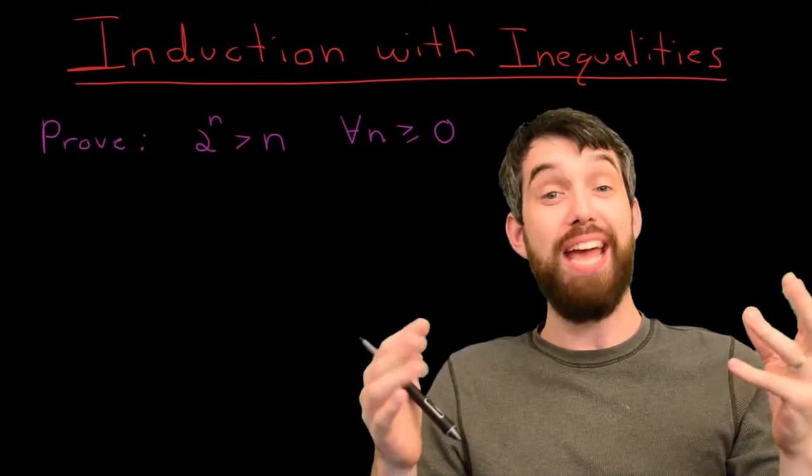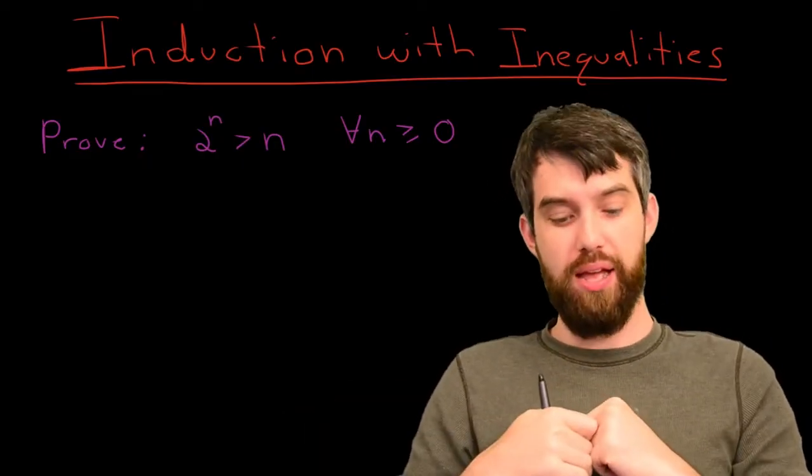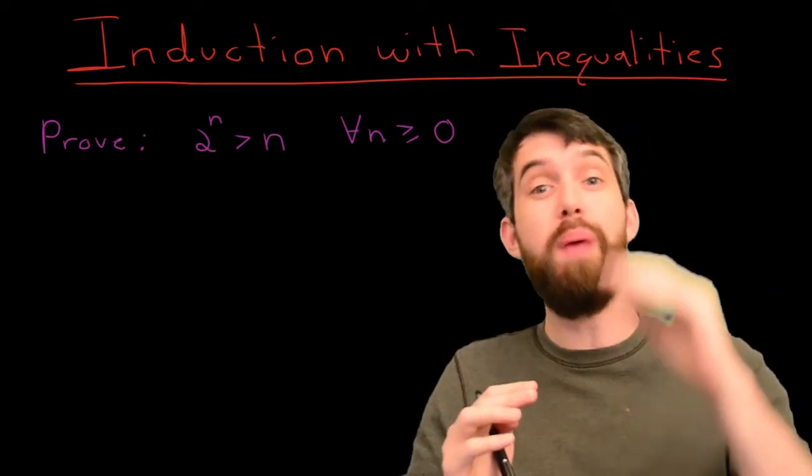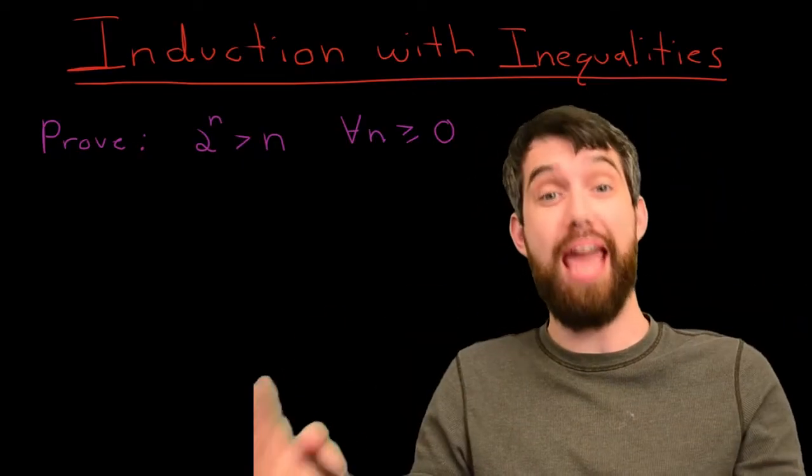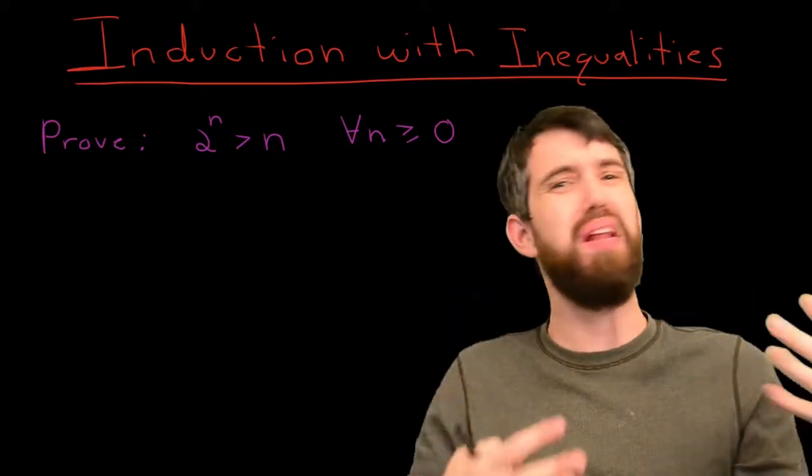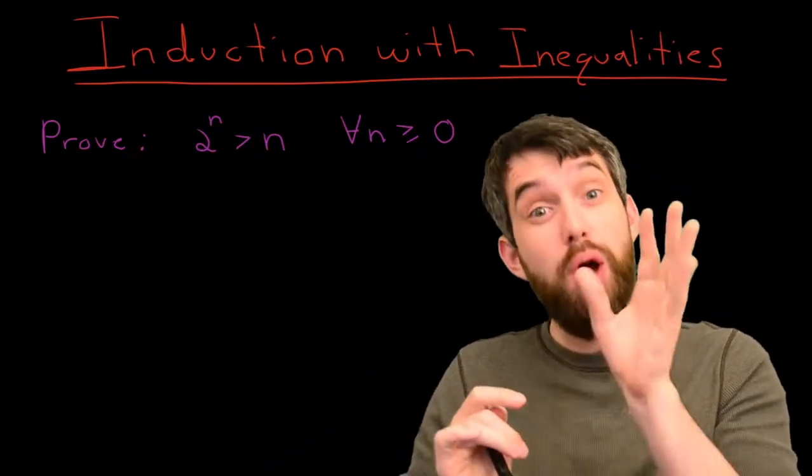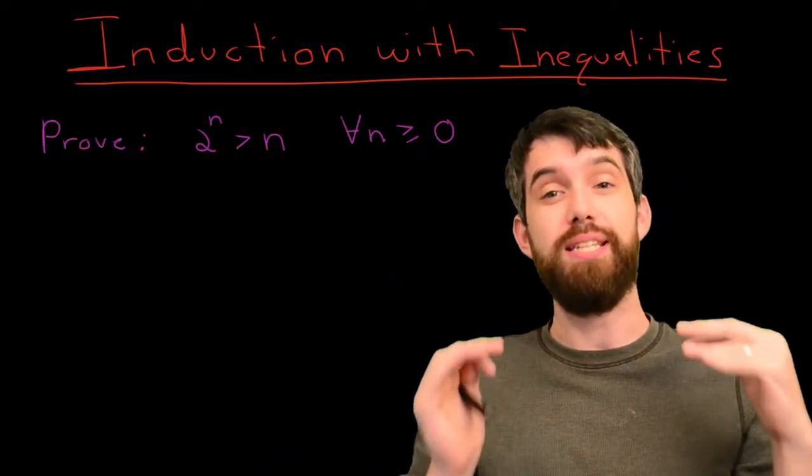In this video, I want to look at an example of induction that has an inequality in it. Indeed, we're trying to show that 2 to the power of n is bigger than n for all values of n greater than or equal to 0. By the way, there are many different techniques to do this - you can do this using calculus - but in this video, we're going to do it via induction.